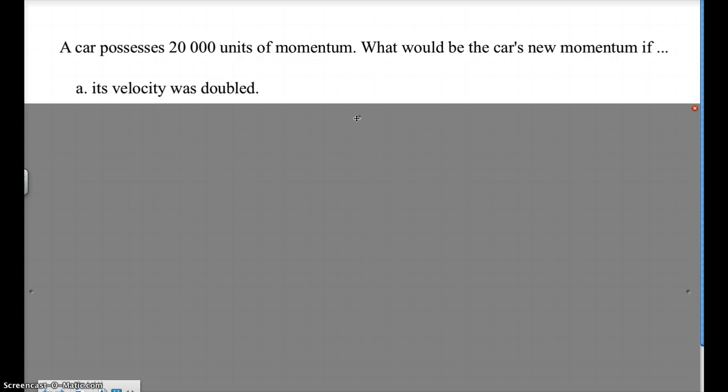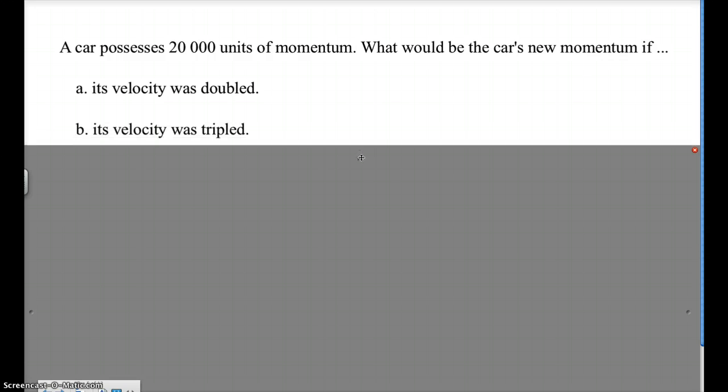All right, so now it's not necessarily so much math. I want you to also do the same thing though. Pause if you need to and try to think of the answer, and then play and I'll give you the answer. A car has 20,000 units of momentum. Here they didn't say kilogram meters per second, they said 20,000 units of momentum, which you'll see sometimes too. The question is, what would be the new momentum if you doubled the velocity? And the answer here would be that the momentum would also be doubled. If you tripled the velocity, the momentum would also then be tripled.